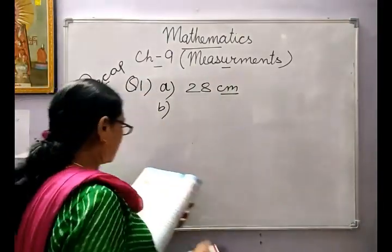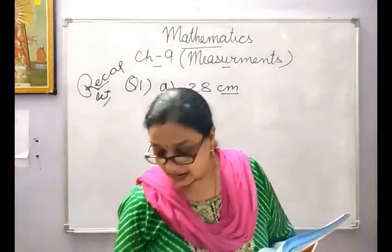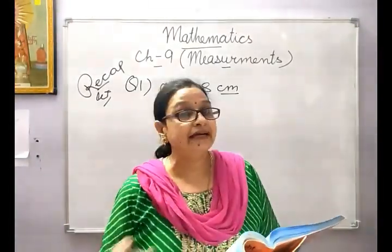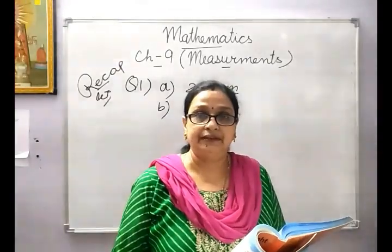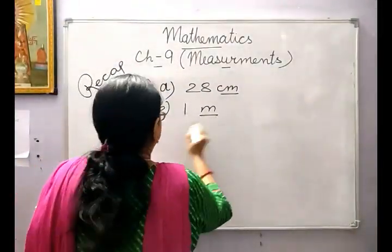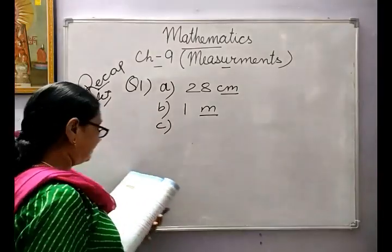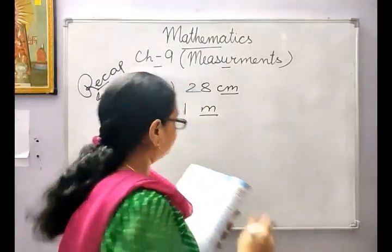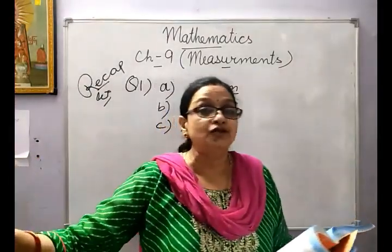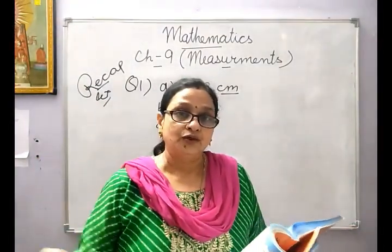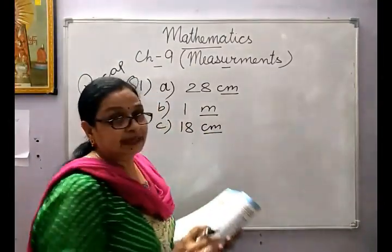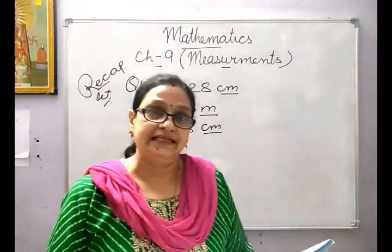Then the height of your study table — height from the ground — it cannot be in kilometres or centimetres, so it will be in metres: 1 metre. Then third: the length of the pencil is about 18. It can't be metres because it is not too long, and neither too short to be millimetres, so it will be centimetres.